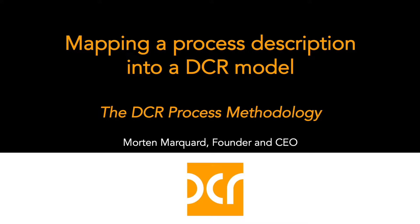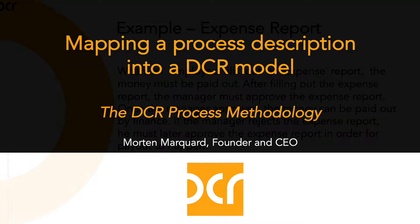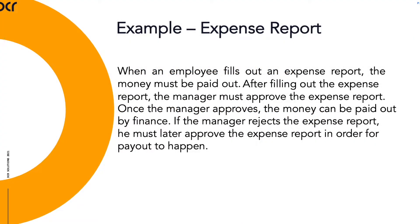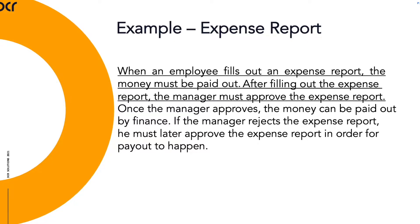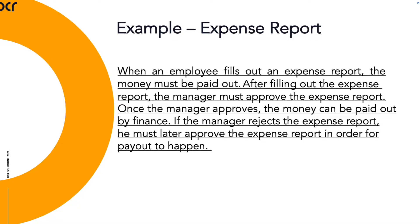In this video, I'll go through how a process model is created using DCR and a process description. Let us assume we have a process description that reads as follows: when an employee fills out the expense report, the money must be paid out. After filling out the expense report, the manager must approve the expense report. Once the manager approves, the money can be paid out by finance. If the manager rejects the expense report, he must later approve the expense report in order for payout to happen. We can map such a process description into a DCR graph, which can be executed in various IT systems without any coding.